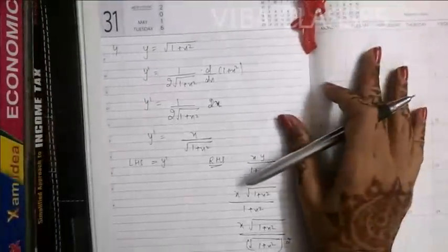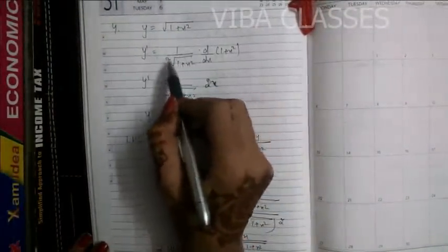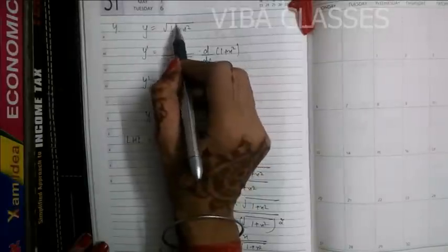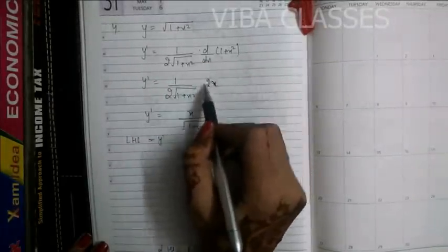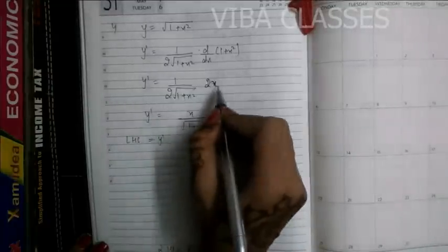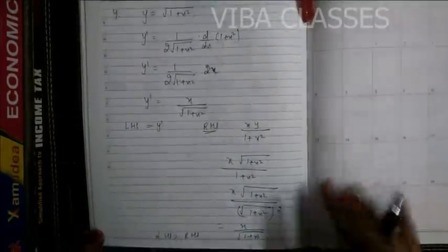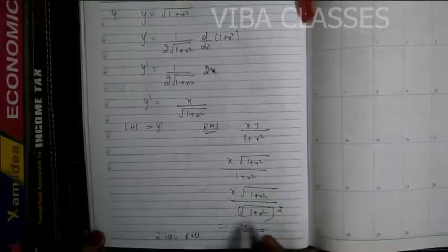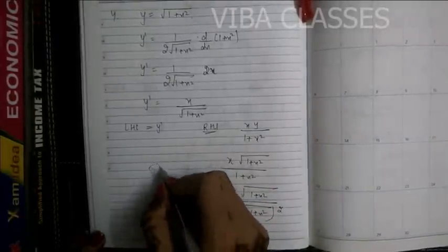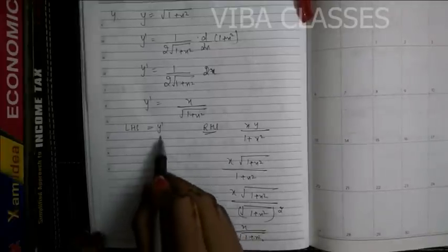Question number 4: y = √(1 + x²). Taking the derivative using the chain rule: y' = 1/(2√(1+x²)) × 2x, and the 2 cancels out to give y' = x/√(1+x²). Now taking the right hand side xy/(1+x²), substitute y = √(1+x²): x·√(1+x²)/(1+x²). The (1+x²) and √(1+x²) cancel out to give x/√(1+x²), which equals the left hand side y'. So both sides are equal.